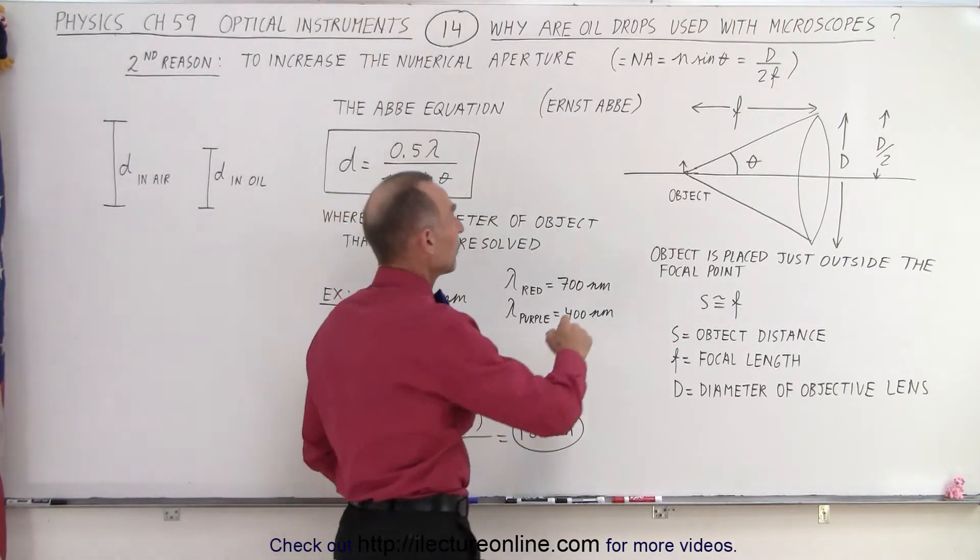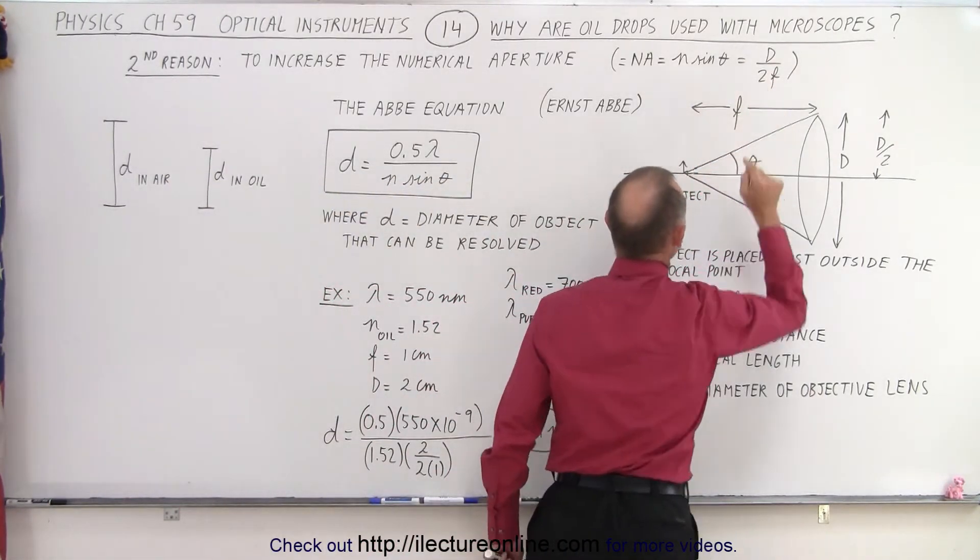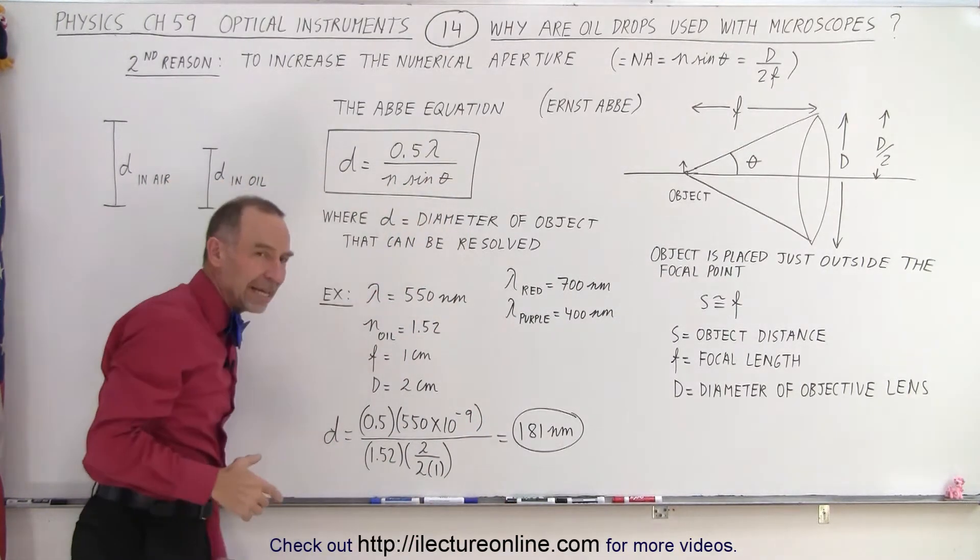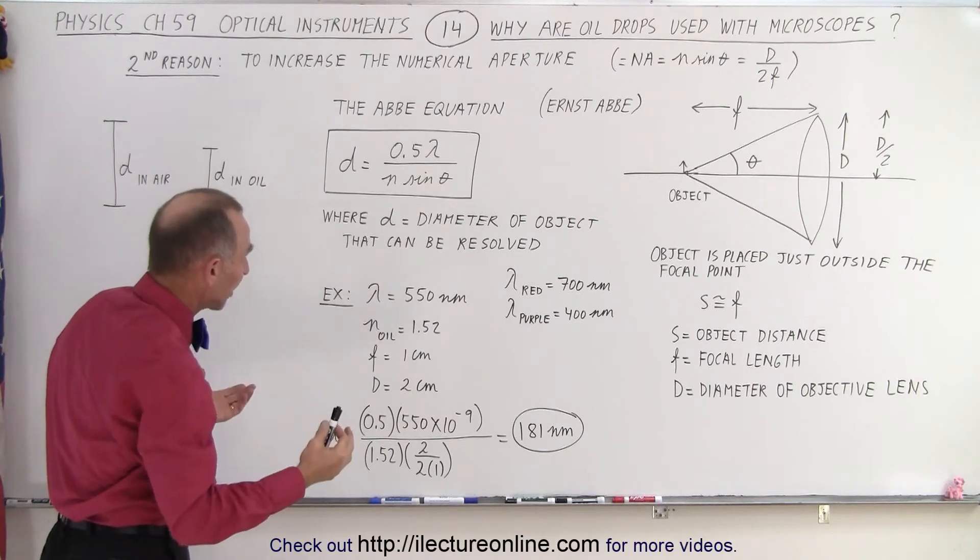We can also think about numerical aperture as being d over 2f. Again, if we increase n, which is the index of refraction,